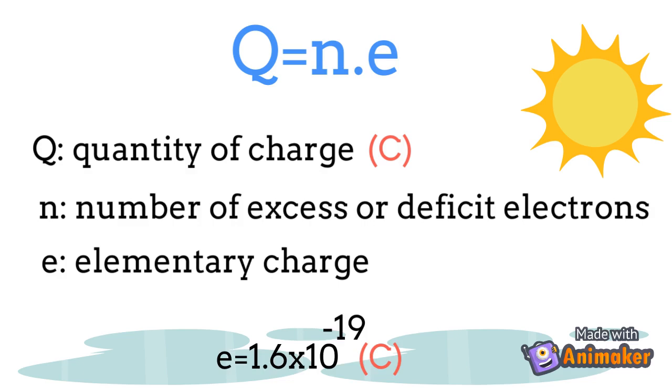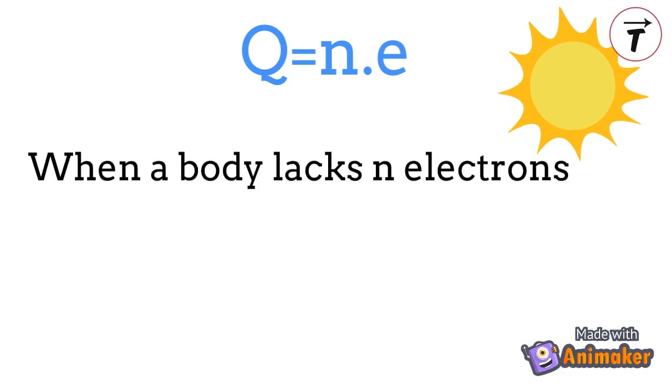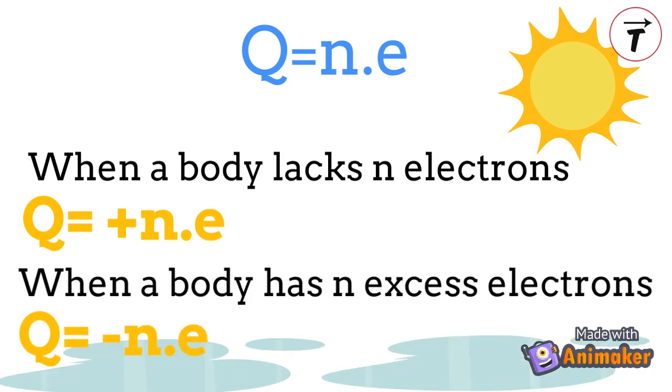Note that this equation gives the absolute value of the charge q. When the body lacks n electrons, the quantity of charge q will be positive. If the body has excess n electrons, q will be negative.